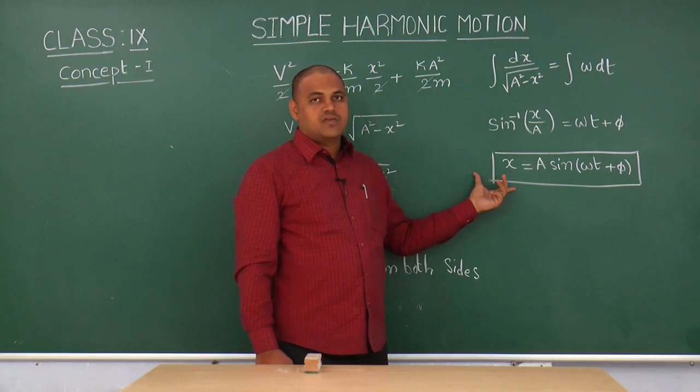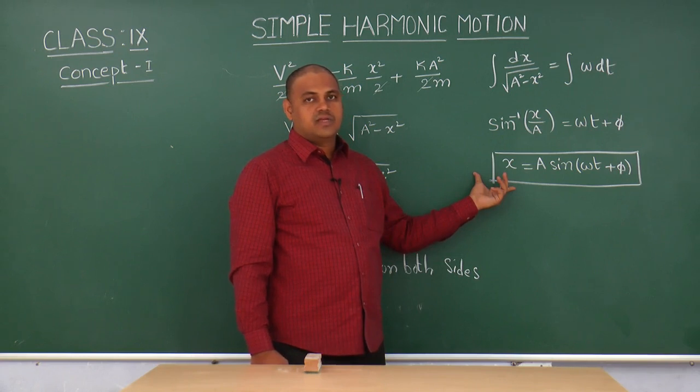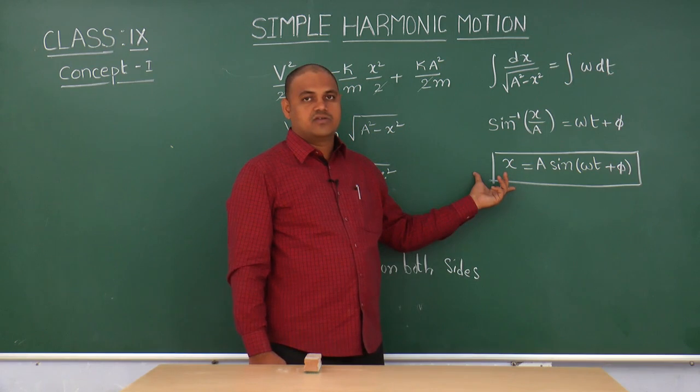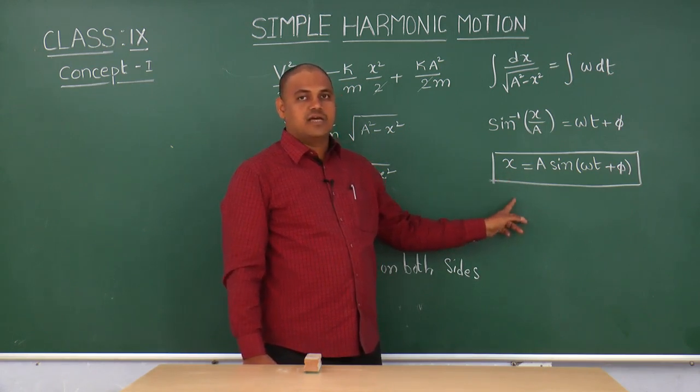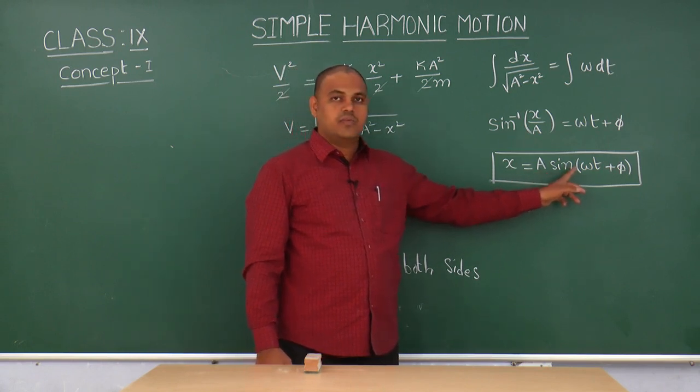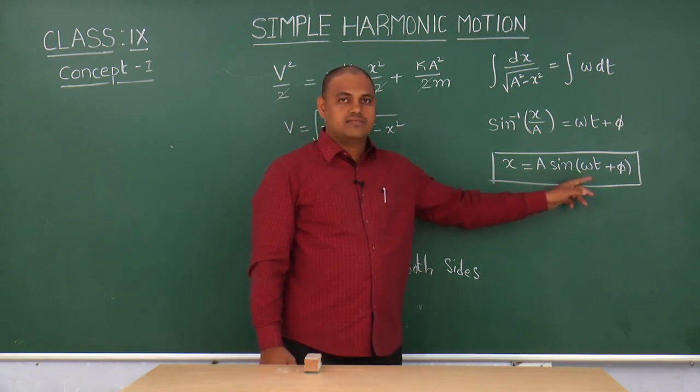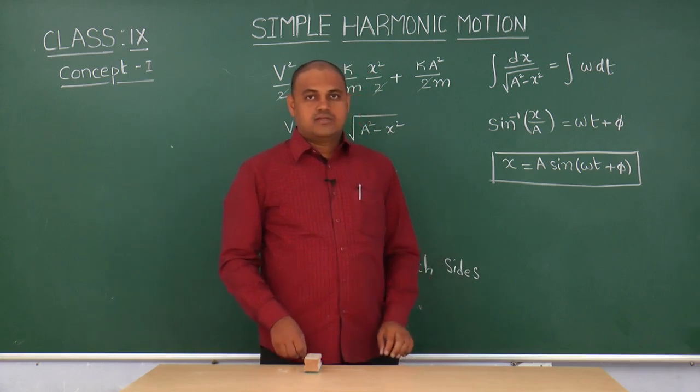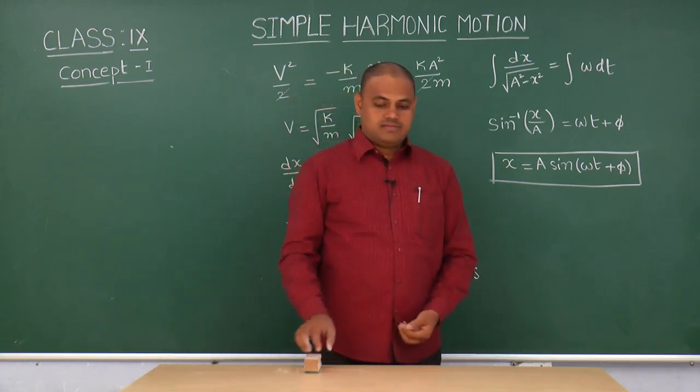Already we learn about differential form of SHM, d square x by dt square plus omega square x is equal to 0. For that equation, this is the solution of SHM, x equal to a sin omega t plus phi. Thank you.